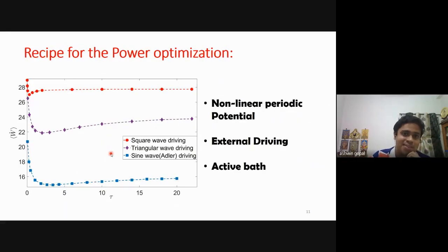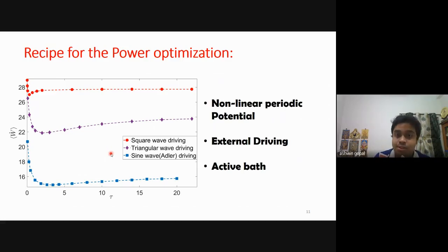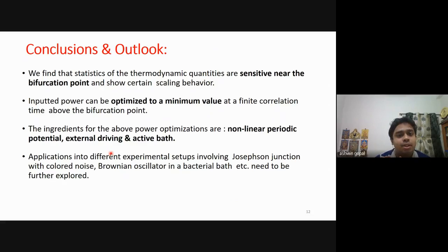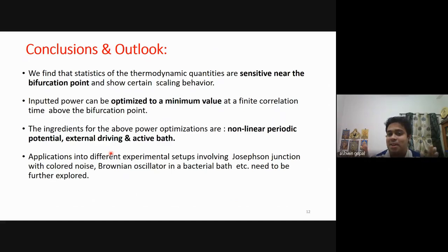To generalize, we tested numerically with different potentials — square wave driving, triangular wave, and the Adler driving — and find that the phenomenology of power minimization appears in all three. We believe the recipe for this power minimization requires: a non-linear periodic potential, external driving, and an active bath. To conclude: the statistics of thermodynamic quantities are sensitive near the bifurcation point, and the power can be optimized to a minimum value at a finite correlation time above the bifurcation point. We hope to collaborate with experimentalists to study this behavior. Thank you.